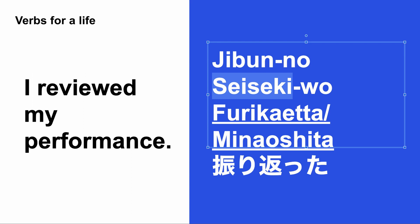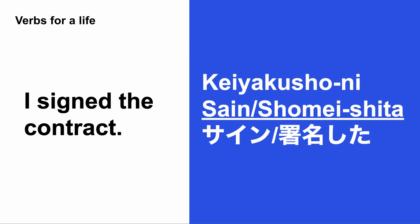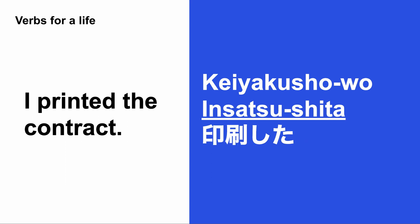Let's quickly review the verbs learned today. サイン / 署名した — I signed the contract: 契約書にサインした / 署名した. 印刷する — I printed the contract: 契約書を印刷した / 印刷しました.